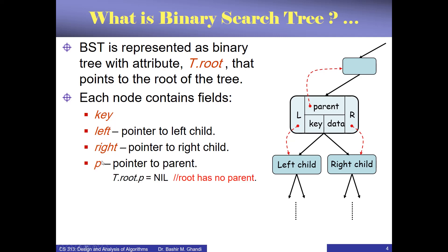An additional variable in this representation — which we did not have in the data structures course — is that each node also has a reference to its parent, a reference P pointing back to the parent. Finally, we may have an additional variable for satellite data: apart from the key, you may have more data stored in the node. In object-oriented languages like Java this is grouped as one object, but other languages may keep key and data separately.